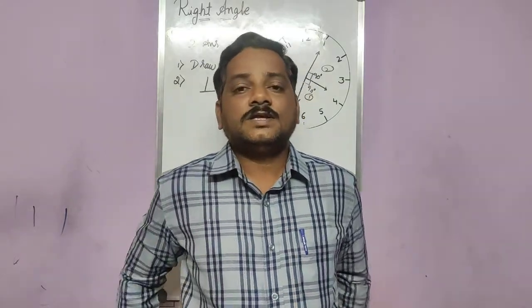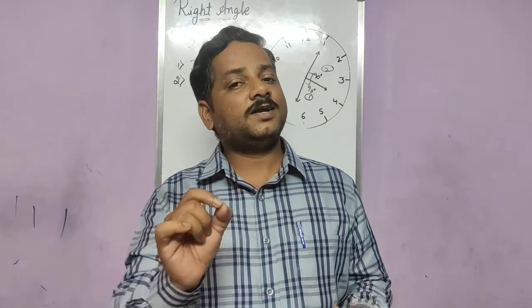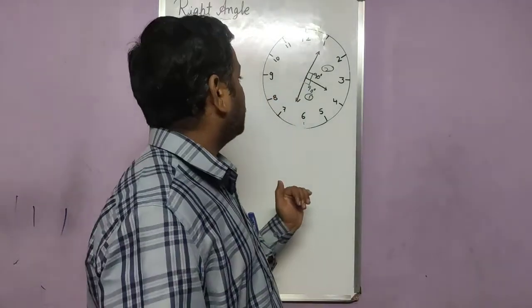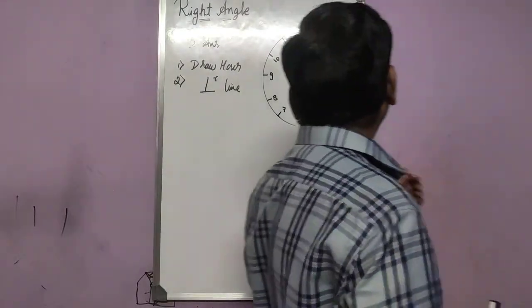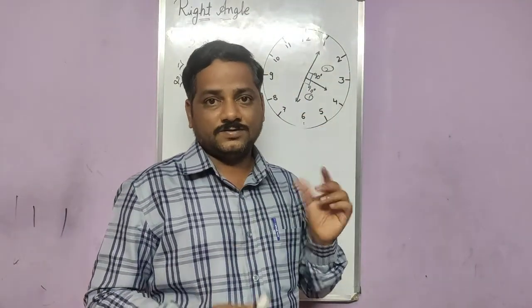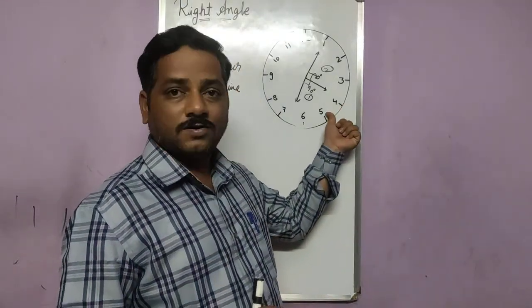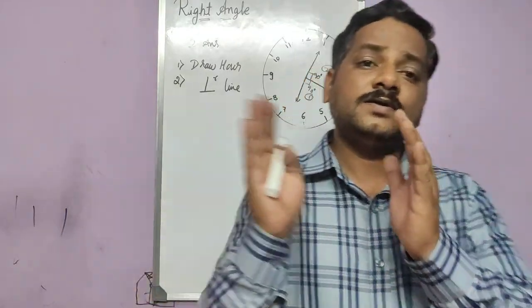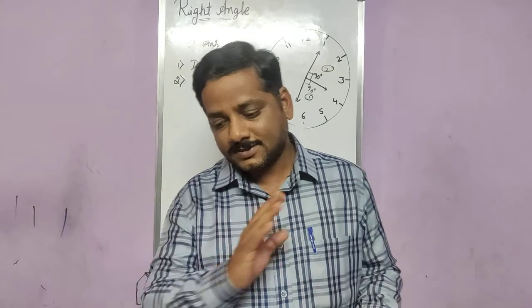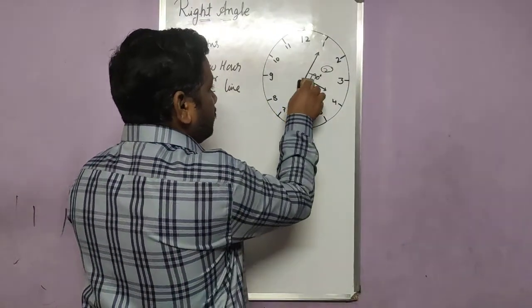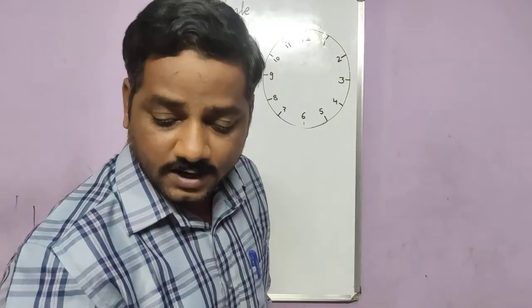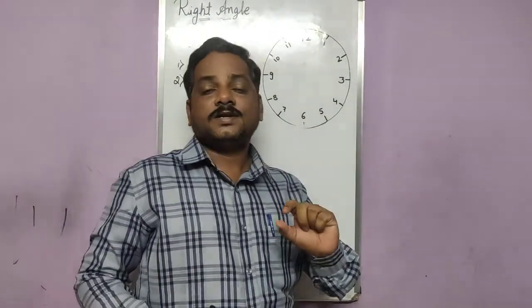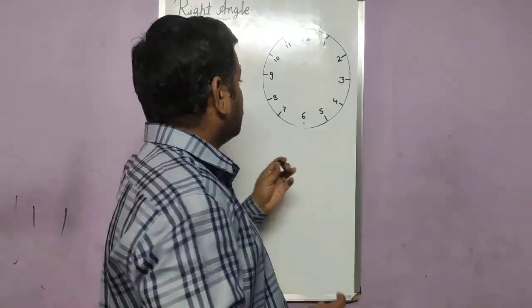In competitive exams, they give a time range and ask: between 5 and 6 o'clock, at what time are the hour and minute hands exactly 90 degrees apart? That is how the question is presented. So let me take example question one: at what time between 4 o'clock and 5 o'clock are the hour and minute hands going to be at a right angle?